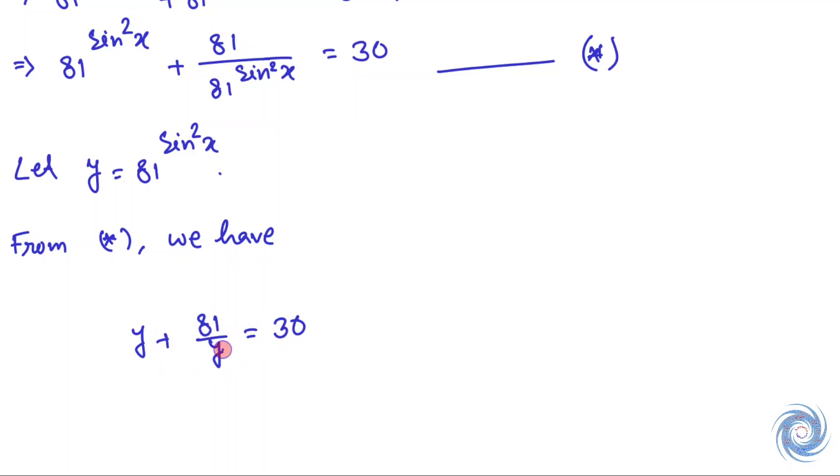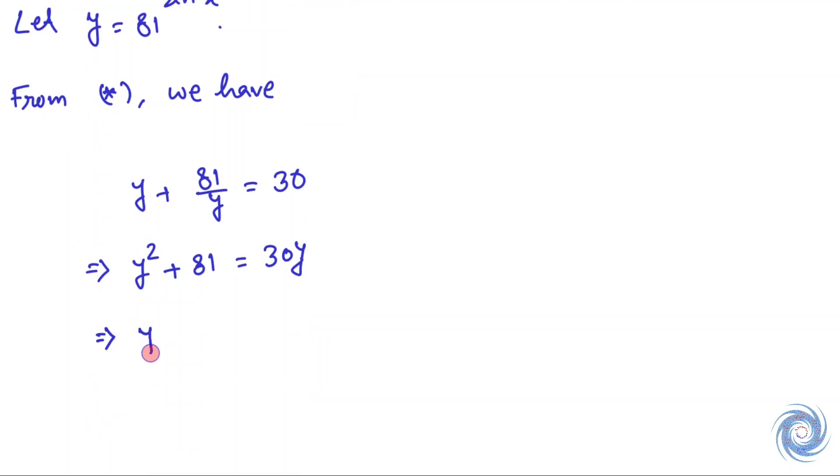y + 81/y = 30, and from here we have y² - 30y + 81 = 0, which factors as (y-27)(y-3) = 0.